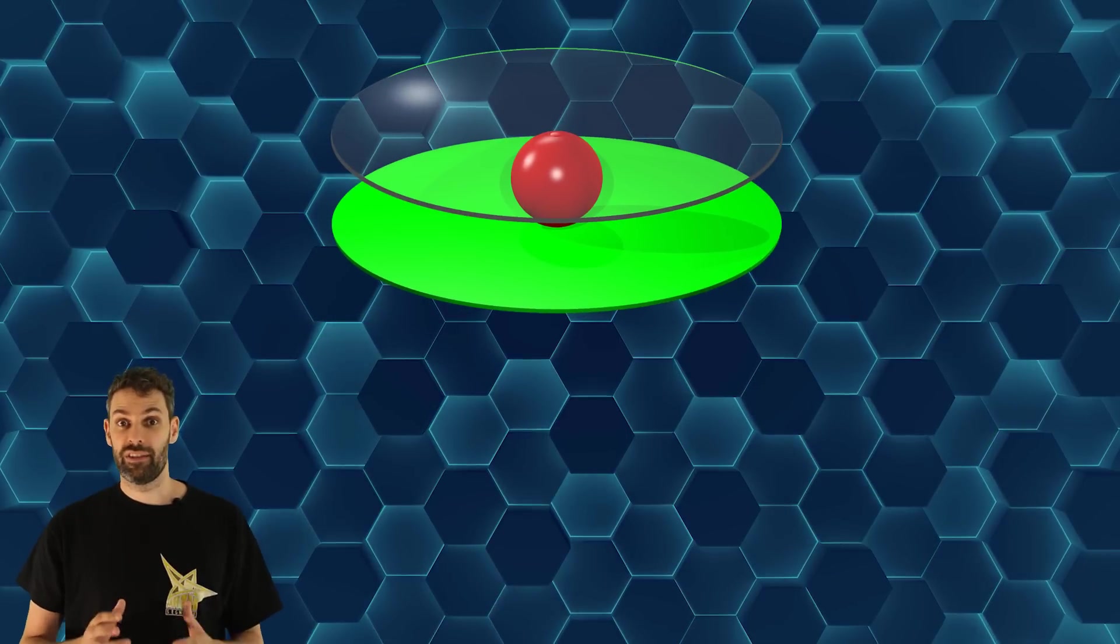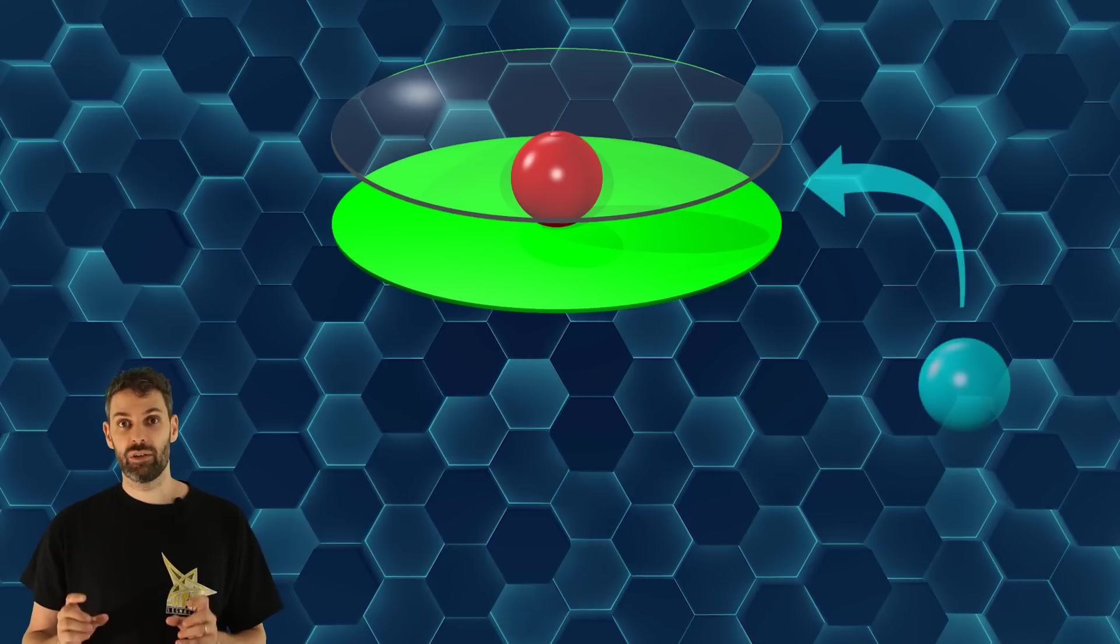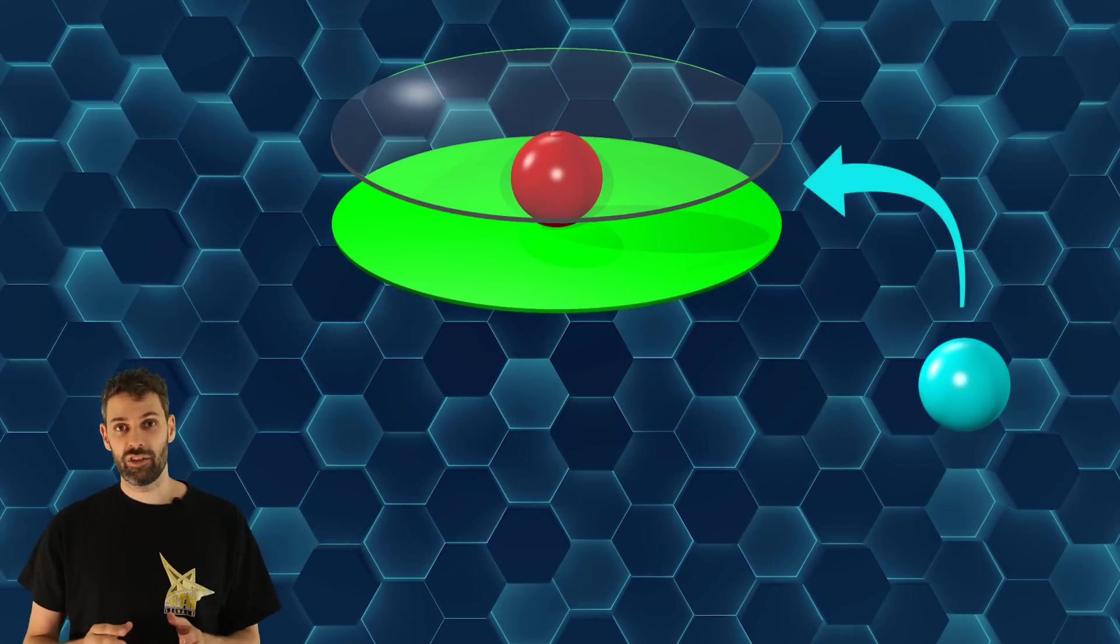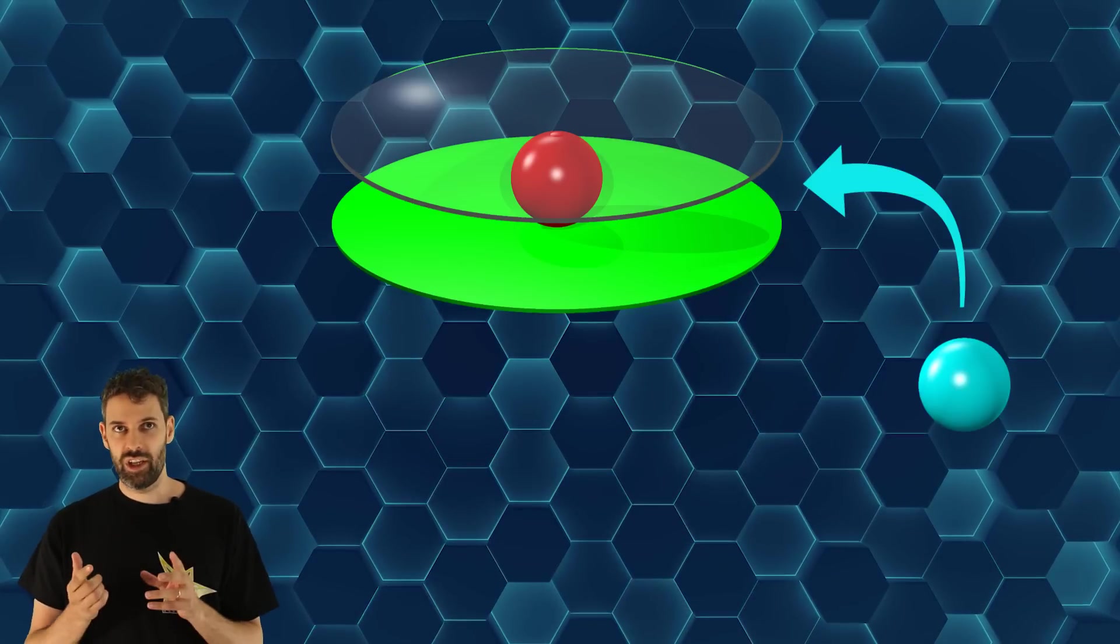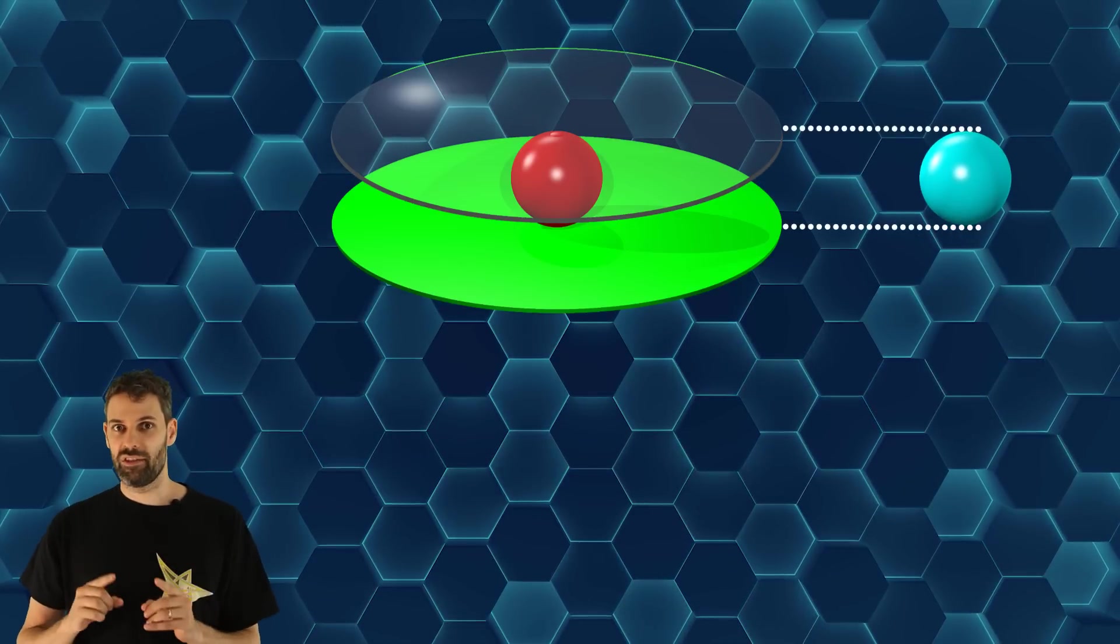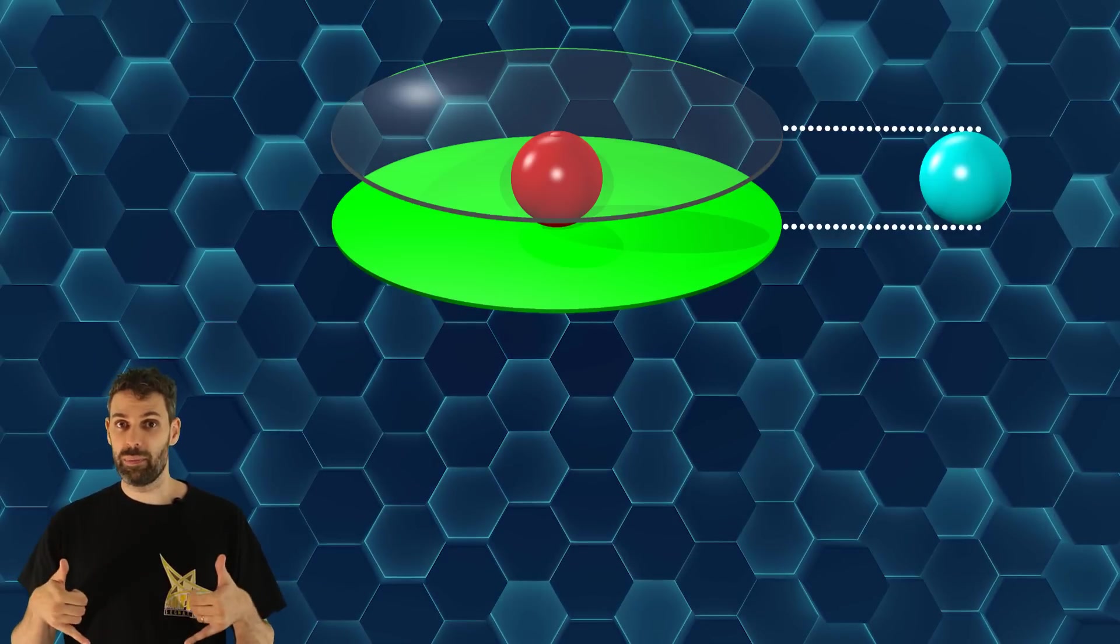Did you see why the problem is now easier? All the blue spheres have to be tangent to both the planes, and so they will have all the same diameter, which is the same diameter of the red sphere, and which is equal to the distance between the two planes.